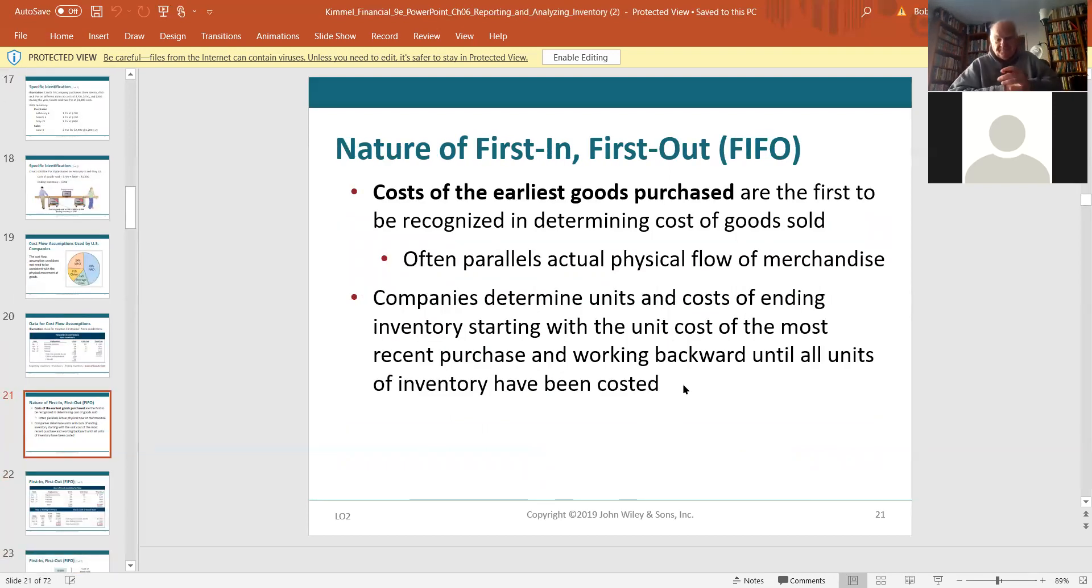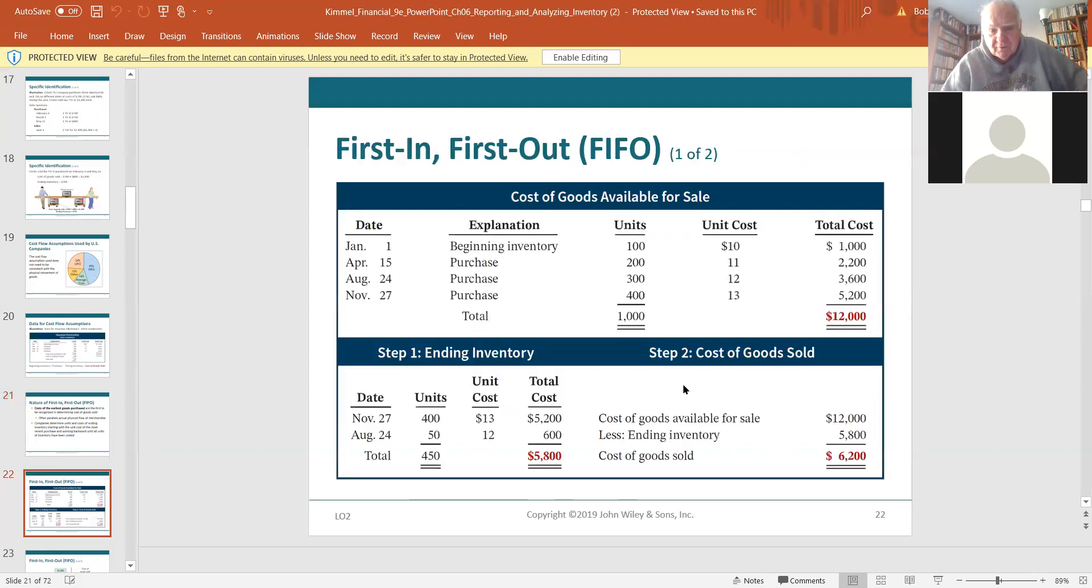First in, first out. The earliest goods purchased are the first to be recognized, where it really would be the beginning inventory, and then the earliest purchases. And sometimes this matches the real world a little bit, but it doesn't have to. It doesn't have to. First in, first out. I mean, when you go to the supermarket, you buy milk. That milk has only been out there for a couple of days before it goes bad. So they're pretty much selling the newest stuff, the oldest stuff, first to get rid of it. Companies determine units and costs of the inventory, starting with the unit cost of the most recent purchase, working backwards. I hate they keep saying purchase. They should say beginning inventory, but okay.